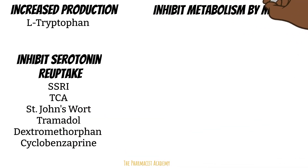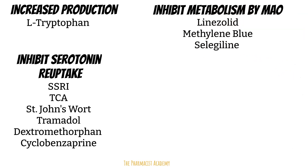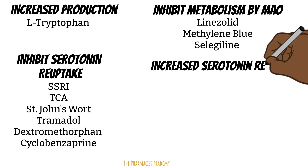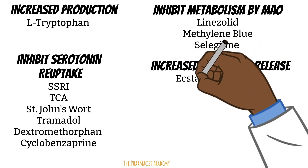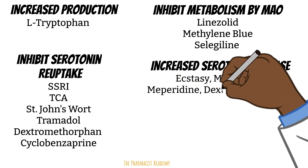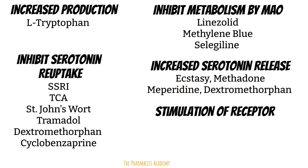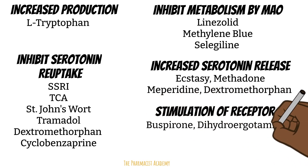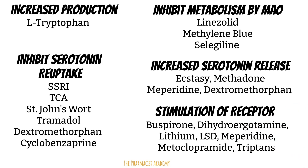Inhibitors of monoamine oxidase prevent the breakdown of serotonin; examples include linezolid, methylene blue, and selegiline. Increased serotonin release from cells can be caused by ecstasy, methadone, meperidine, and dextromethorphan. Medications that directly stimulate serotonin receptors include buspirone, dihydroergotamines, lithium, LSD, meperidine, metoclopramide, and the triptans.